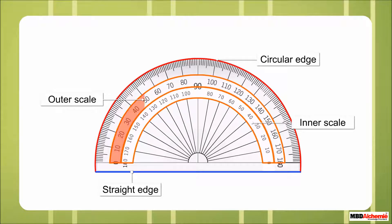The outer scale is marked from 0 to 180 in a clockwise direction. The inner scale is marked from 0 to 180 in an anticlockwise direction. One mark represents 1 degree and is written as 1 degree. In all, there are 180 divisions, so it is called 180 degrees.